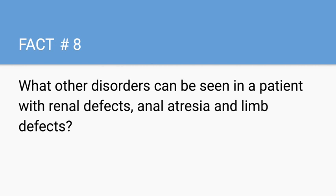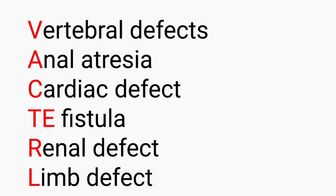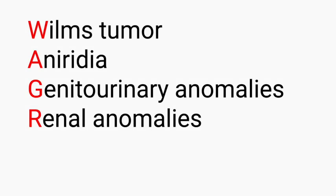What other disorders can be seen in a patient with renal defects, anal atresia, and limb defects? This requires us to know about the VACTERL association. V — vertebral defects, A — anal atresia, C — cardiac defects, TE — tracheoesophageal fistula, R — renal defects, L — limb defects.